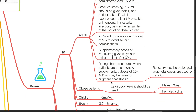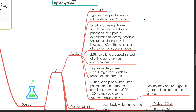Dosage of thiopenthal — intravenous dose. For adults it is usually 3 to 5 mg per kg, typically 4 mg per kg, administered over 15 to 20 seconds. Small volumes of 1 to 2 ml should be given initially and the patient asked if pain is experienced to identify possible unintentional intra-arterial injection before the remainder of the induction dose is given. 2.5% solutions are used instead of 5% to avoid serious complications. Supplementary doses of 50 to 100 mg are given if the eyelash reflex is not lost after 30 seconds. During short procedures, supplementary doses of 25 to 100 mg may be given to augment anesthesia. Recovery may be prolonged if a large total dose is used, such as more than 10 mg per kg.